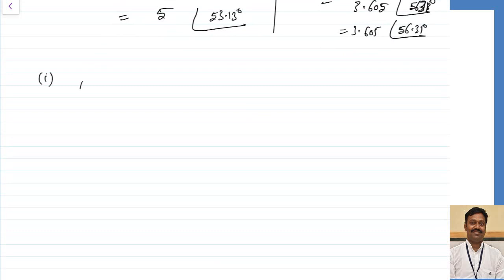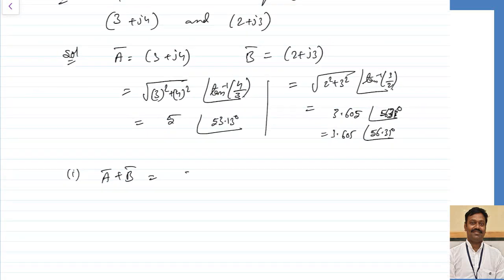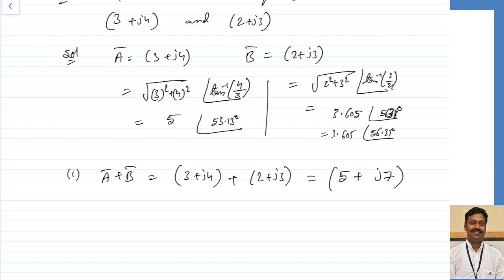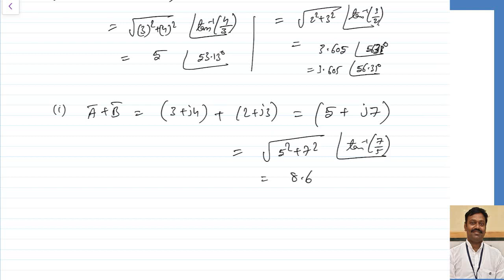For addition a plus b in rectangular: (3 plus j4) plus (2 plus j3) equals 5 plus j7. Converting to polar: square root of (5² plus 7²) at angle tan inverse(7/5) gives 8.6 at an angle of 54.46 degrees.